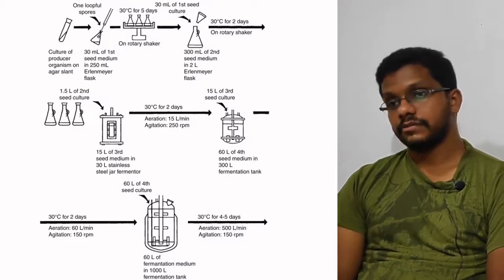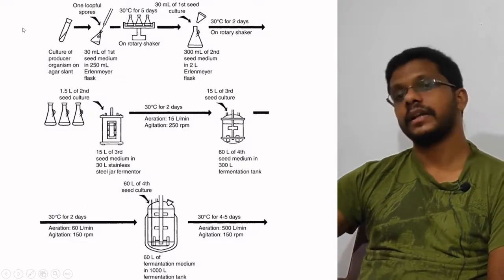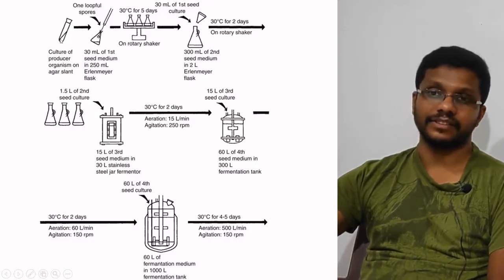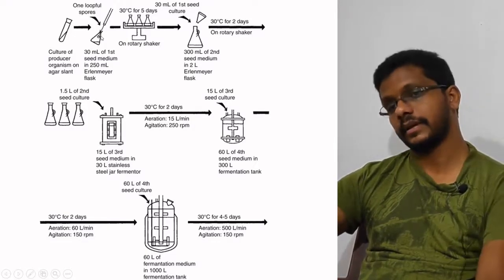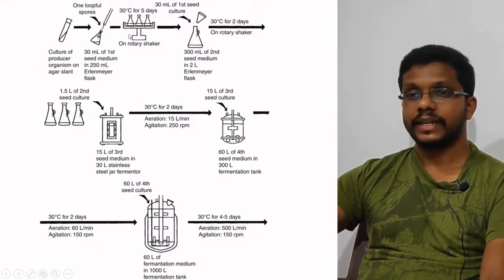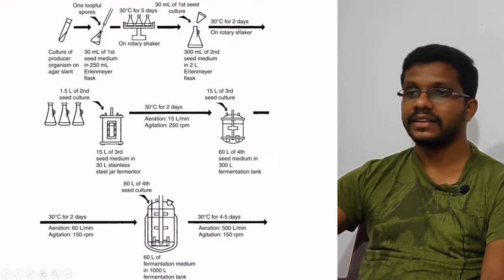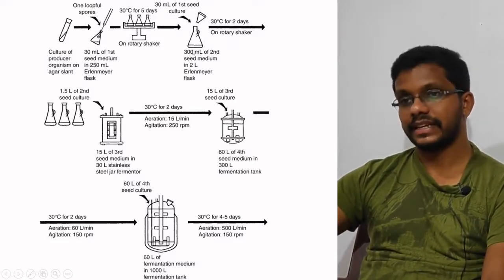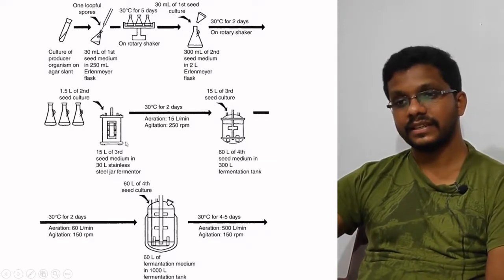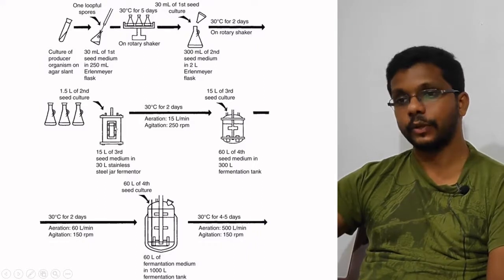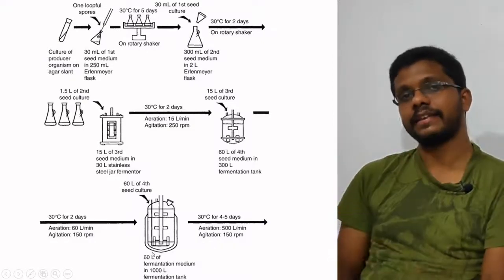Here is a comprehensive figure of the whole process of inoculum development. In this figure we start with the sub-master culture, skipping the Petri plate method. One loopful of microorganism is used to inoculate 30 ml of media. After incubation, this 30 ml is used to inoculate 300 ml. After incubation, multiple 300 ml flasks are combined to inoculate a 50-liter fermenter. This 50-liter media after growth is inoculated to a 500-liter, then to a 1,000-liter fermenter — step by step expanding the media.